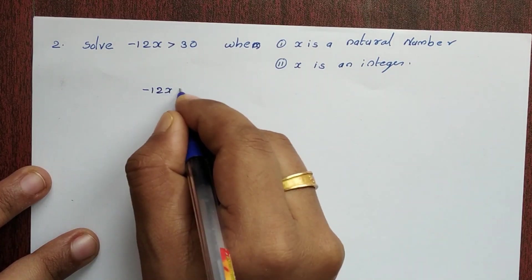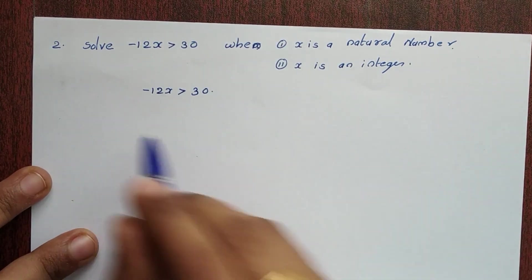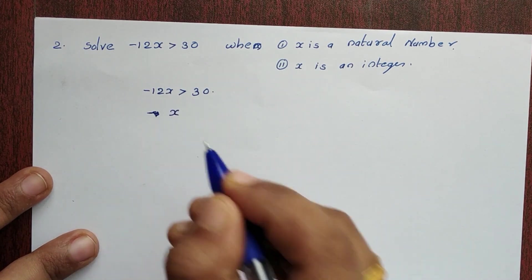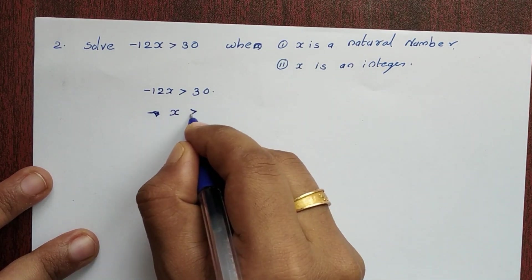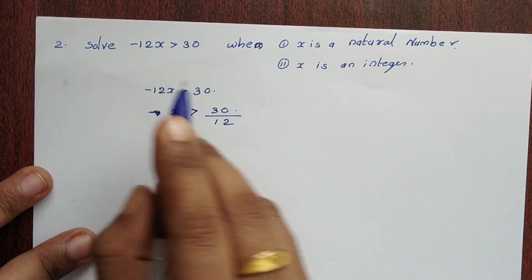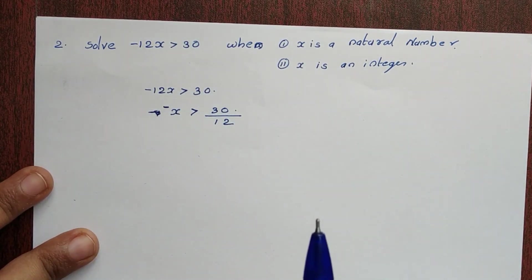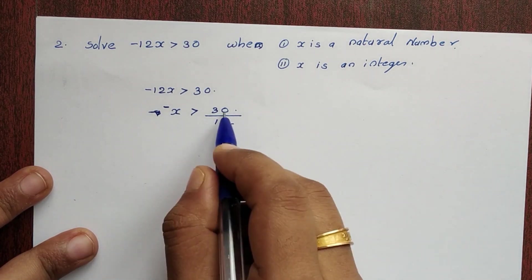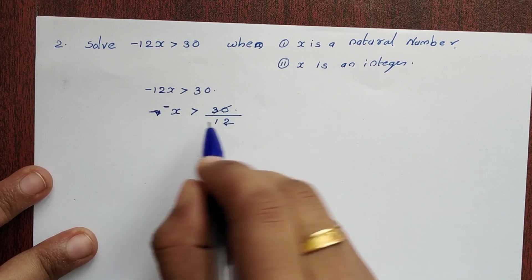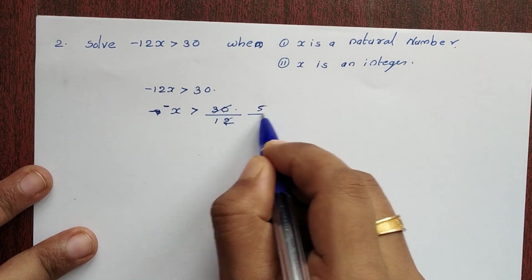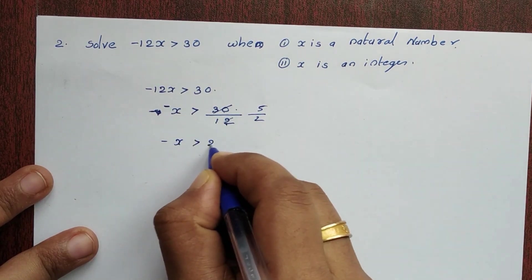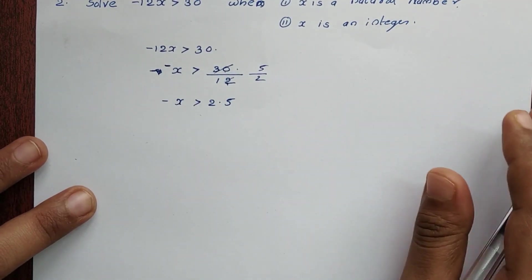We have -12x > 30. Dividing both sides: x > 30 divided by -12. Simplifying, we get -x > 2.5, so minus x greater than 2.5.